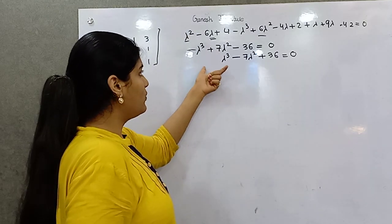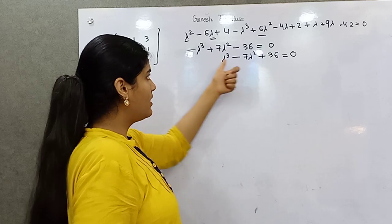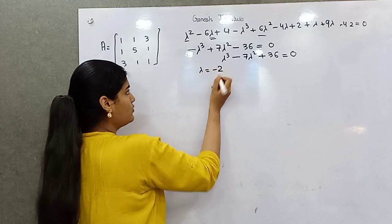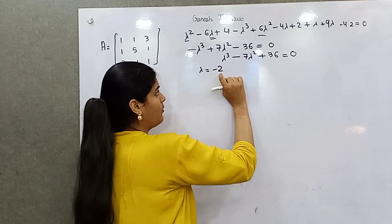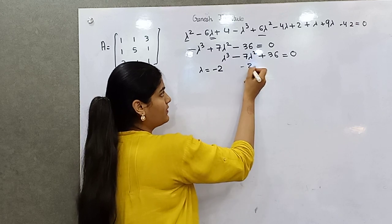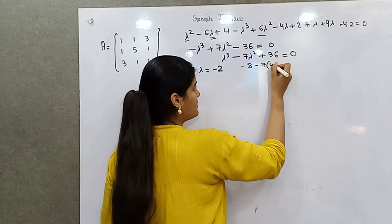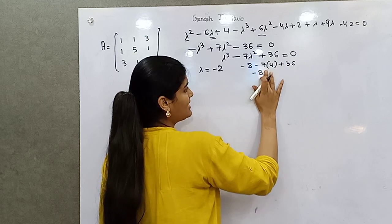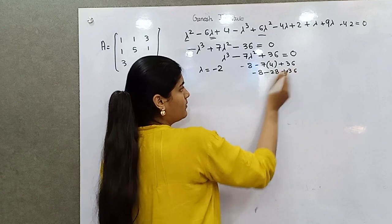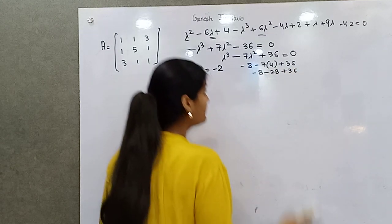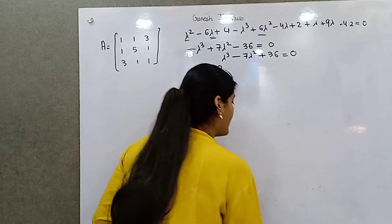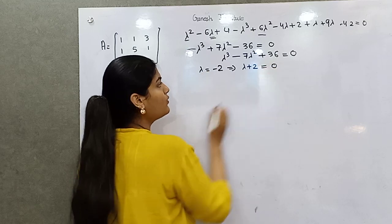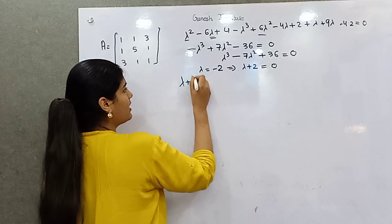Try minus one, minus two. With lambda = -2: minus two cubed is minus eight, minus two squared is plus four, so minus eight plus seven times four (28) minus 36 plus 36 equals zero. So lambda plus 2 is a root — divide the polynomial by (lambda + 2).